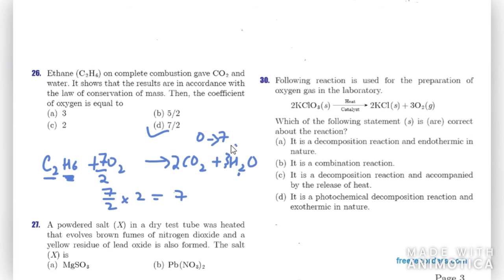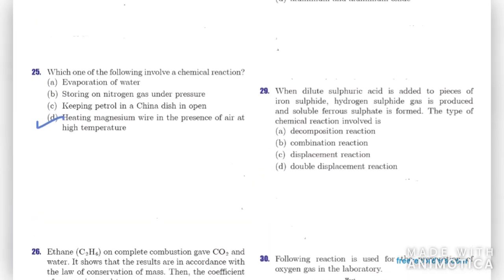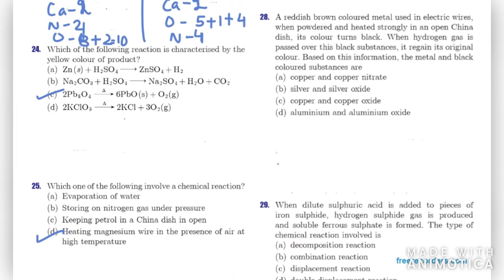Question twenty-seven: a powdered salt X heated in a dry test tube evolves brown fumes of nitrogen dioxide and leaves a yellow residue of lead oxide. The product is lead oxide and nitrogen oxide and oxygen. Therefore the powdered salt must be lead nitrate. The right option is lead nitrate.